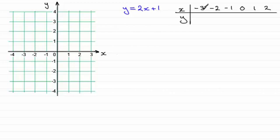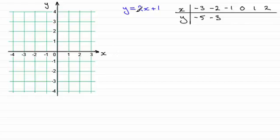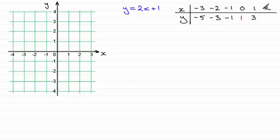So when x equals minus 3, we've got 2 times minus 3, which will be minus 6 plus 1, giving us minus 5. If I substitute minus 2: 2 times minus 2 is minus 4, plus 1 is minus 3. For minus 1: 2 times minus 1 is minus 2, plus 1 is minus 1. When it comes to 0: 2 times 0 is 0, and we're just left with y equaling 1. When x is 1: 2 times 1 is 2, plus 1 is 3. And finally when x is 2: 2 twos are 4, plus 1 is 5.